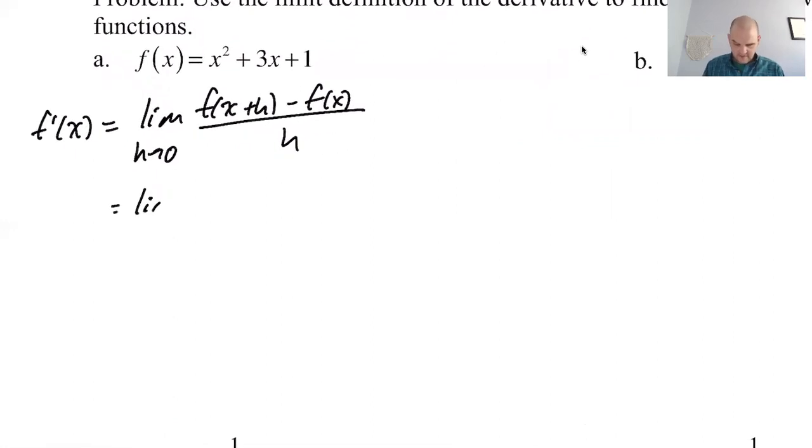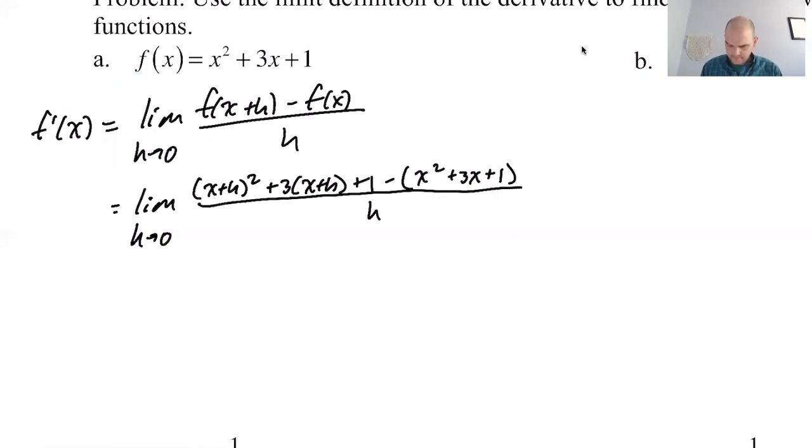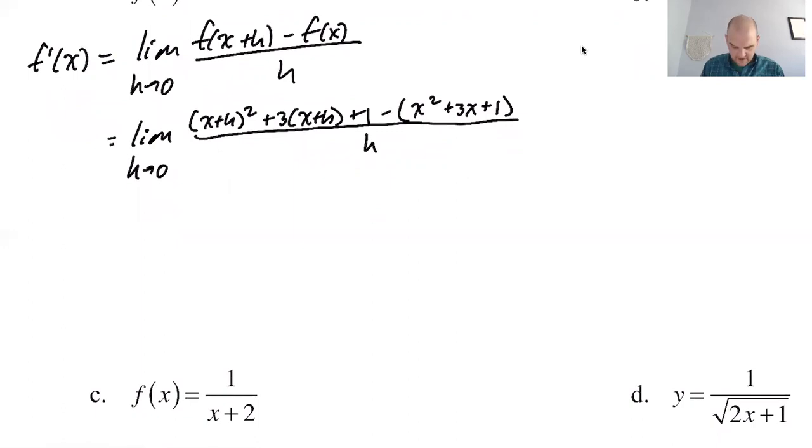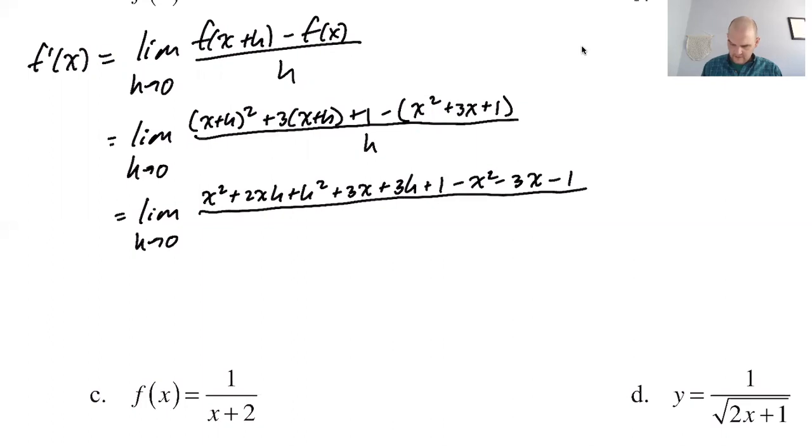So this will be the limit as h approaches 0. f of x plus h is going to be (x + h)² + 3(x + h) + 1, minus, I recommend you put the second part, the minus f of x, always put it in parentheses. Even if you don't really need it, it's going to save you from making mistakes in the long run. So let's see if we can do this. So limit, I'm going to expand. So it'll be x² + 2xh + h² + 3x + 3h + 1, minus x², minus 3x, minus 1, all over h.